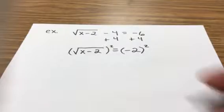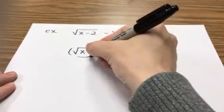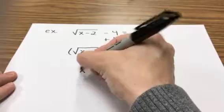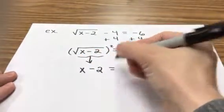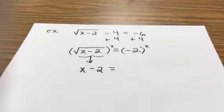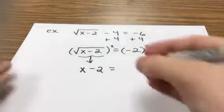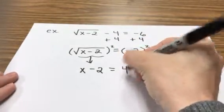All right, so whatever's inside the radical is just going to come on out. So I get x minus 2. And on the other side, I get negative 2 squared. Now, negative 2 times negative 2, that's got to be positive 4, right? So I put the 4 on this side.